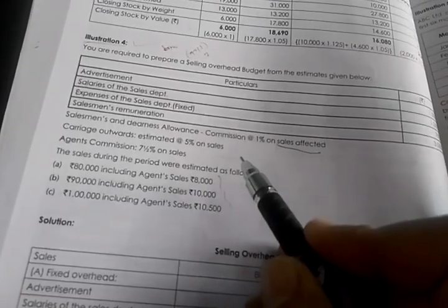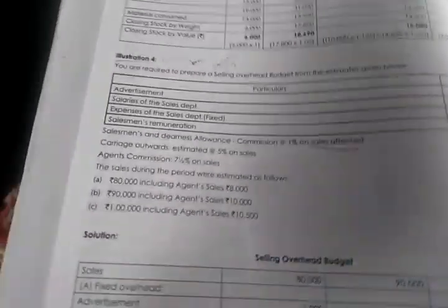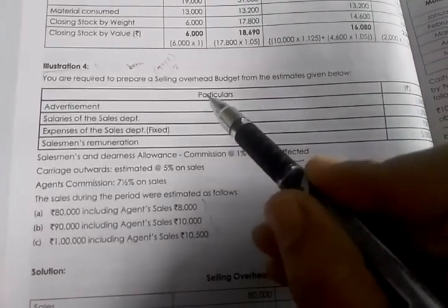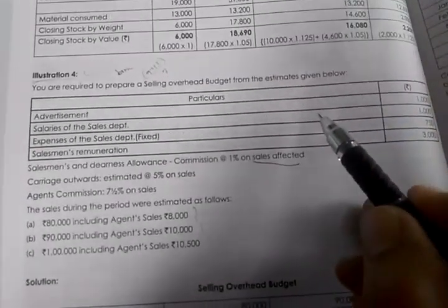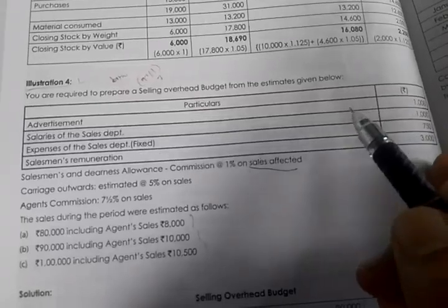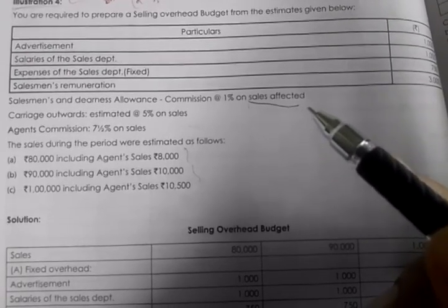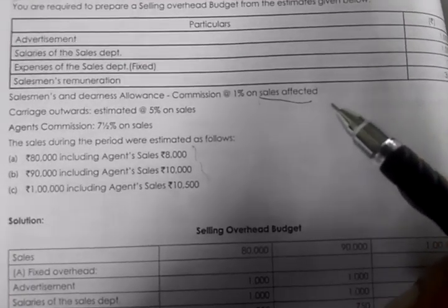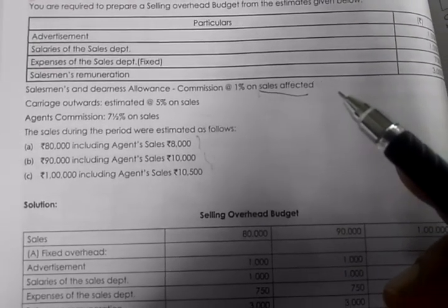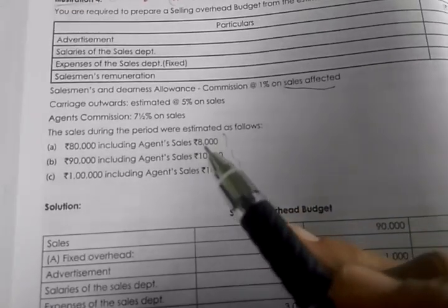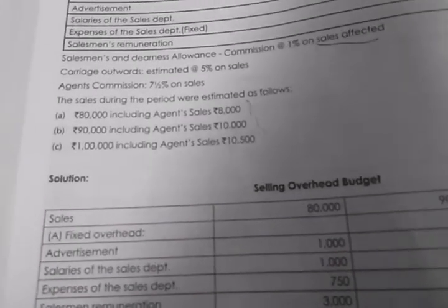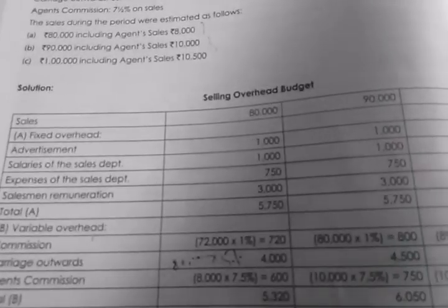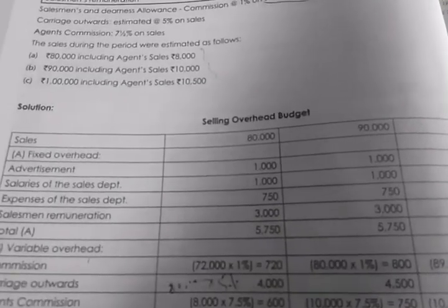Let us start. You are required to prepare a selling overhead budget from the estimated data given. This is fairly straightforward but there are some twists — you have to practice everything. The items given include advertisement, salaries, sales department expenses, salesman's remuneration, dearness allowance, commission at 1% of sales on affected sales, carriage outward estimated at 5% on sales, and agent's commission at 7.5% on sales. The sales during the period were estimated as: ₹80,000 including agent sales of ₹8,000; ₹90,000 including agent sales of ₹10,000; and ₹1,00,000 including agent sales of ₹10,500.